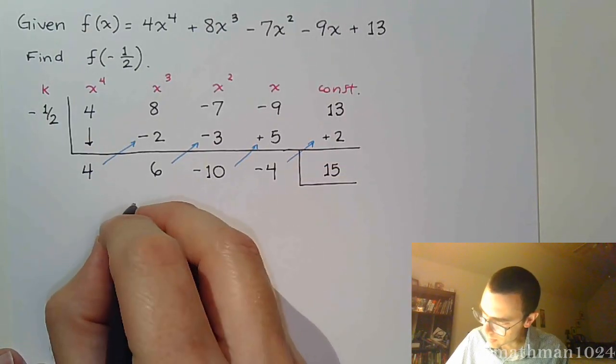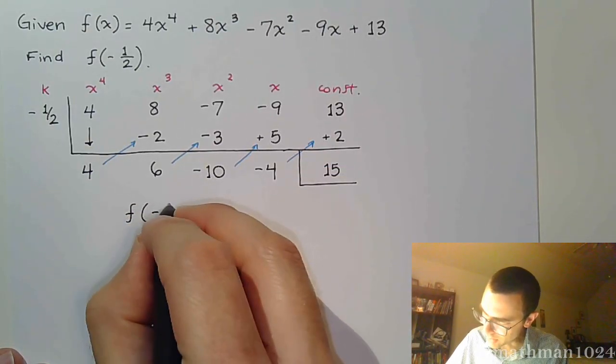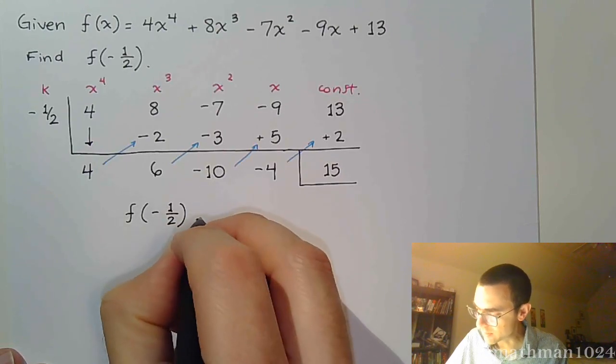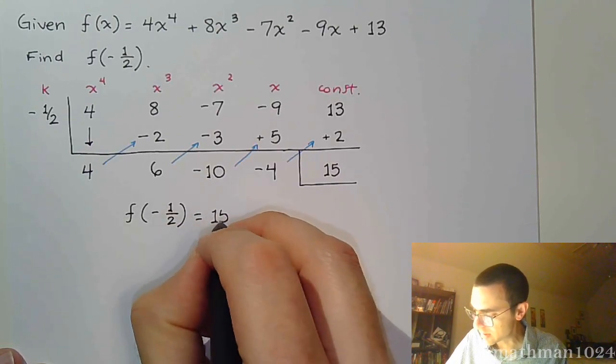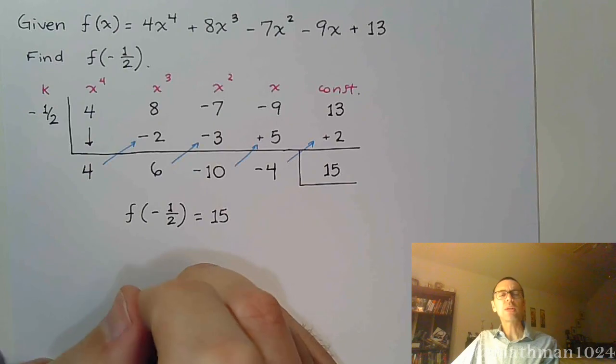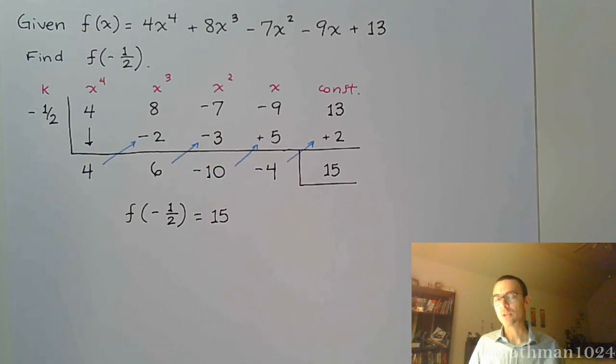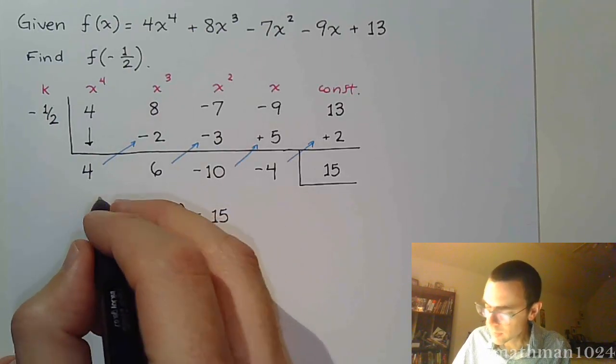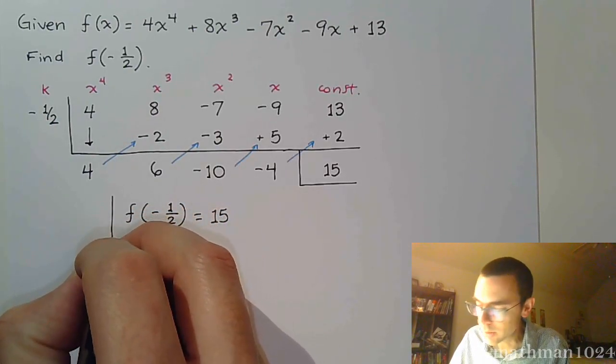So, we know that my function evaluated at negative 1 half is 15. If I were to give you a problem like this on a test or quiz, I'm going to make sure that the numbers aren't outrageous. I'm trying to make sure, like I'll work the problem beforehand to make sure that numbers don't get out of hand, to make sure that if we're dealing with fractions that we deal with nice numbers along the way. I'm nice like that. You're welcome.